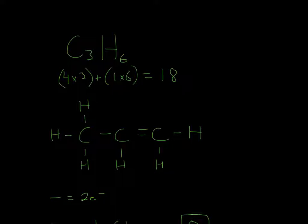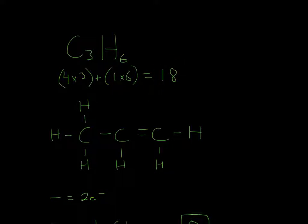How you usually draw these compounds is the Cs will go together, as shown here, and then you draw the Hs around it. Usually this is just trial and error until you get the right amount of electrons, because you have to count these: 2, 4, 6, 8, 10, 12, 14, 16, 18. So these have to match, and usually it's just trial and error until you figure out that this C needs a double bond, and then you can match up all the hydrogens.